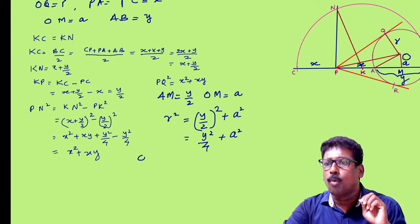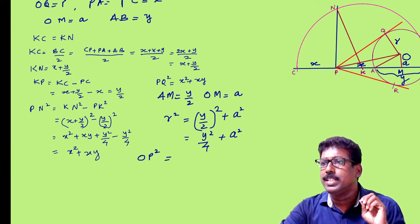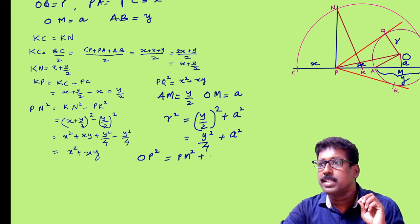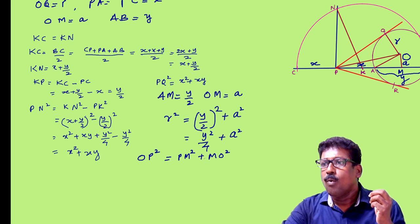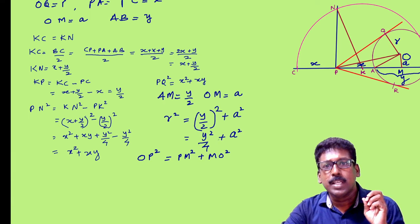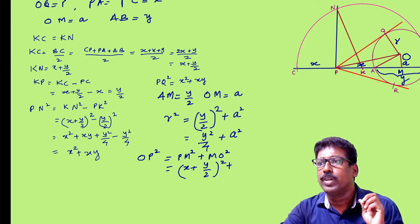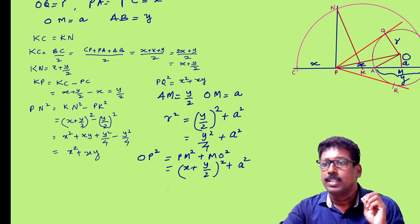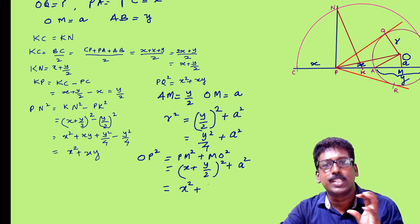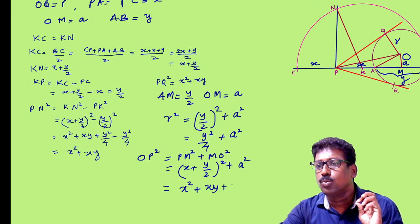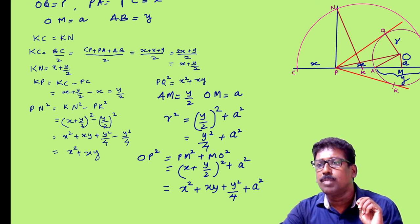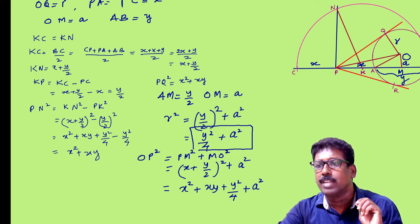Now how will you find OP²? OP² = PM² + MO². What is the length PM? PM = PA + AM = X + Y/2. So OP² = (X + Y/2)² + A² = X² + 2·X·(Y/2) + Y²/4 + A² = X² + XY + Y²/4 + A². But Y²/4 + A² = R². So OP² = X² + XY + R².